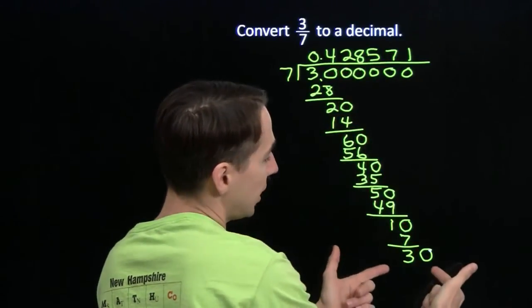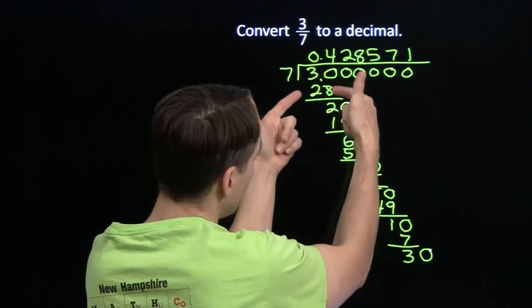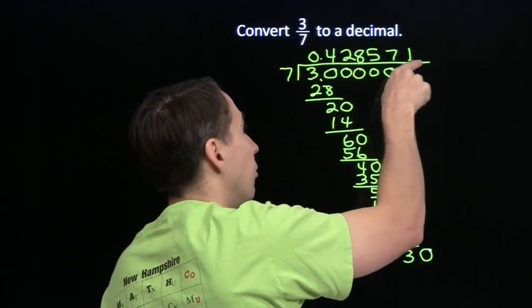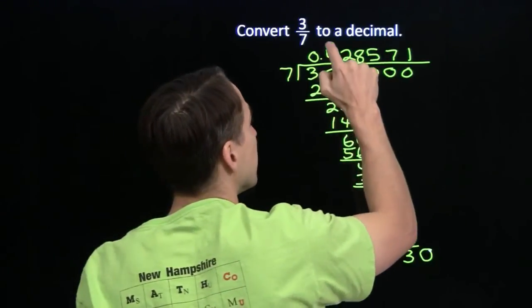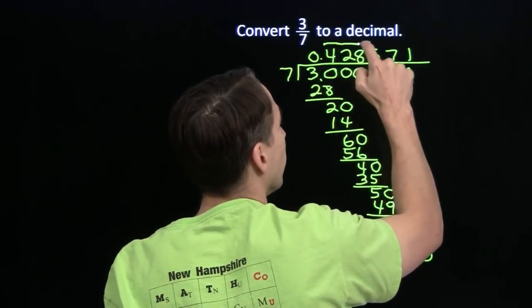We're going right down this chain again, starting down here. 7 into 30 is 28, and we'll just continue on. We'll get 4, then 2, then 8, then 5, and we'll repeat this block of 6 numbers over and over.